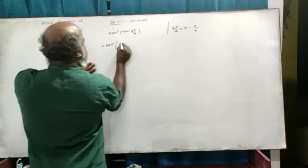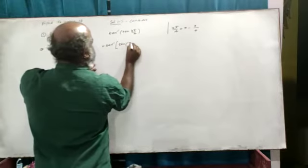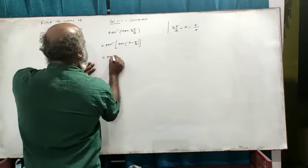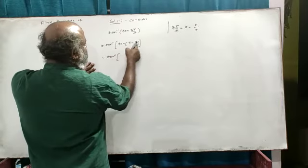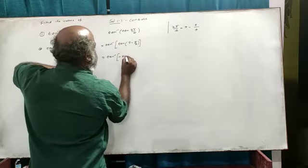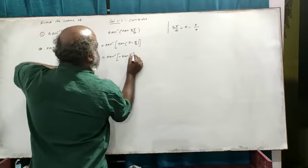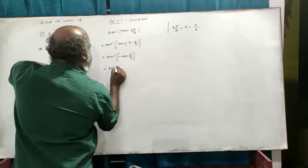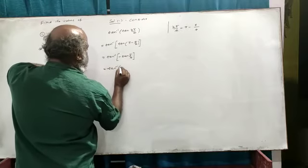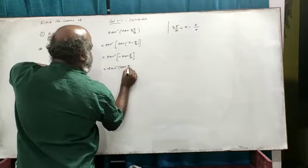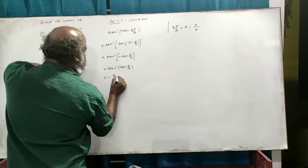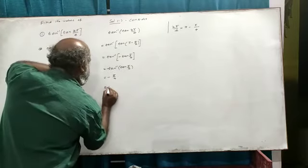So 3π/4 is equal to 4π/4 minus π/4. Therefore, tan inverse of 3π/4 equals tan inverse of minus tan(π/4), which equals minus π/4. That is the solution.